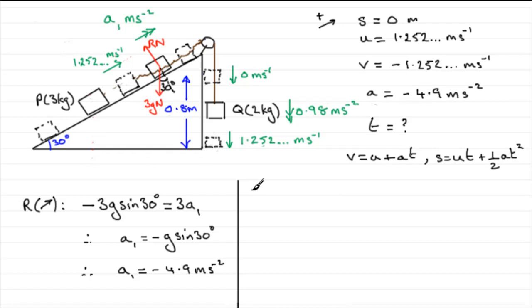Using V equals U plus AT, what are we going to have? V, the final velocity is minus 1.252 and so on, equals U, which was 1.252 and so on, plus AT plus negative minus 4.9 times T. Now if you rearrange this equation for T, I'll leave it up to you because I haven't got much room here. You should find that you get T equals 0.511 and so on. And if you round that up to say, what should we have, two decimal places, then it becomes 0.51 seconds. All right?